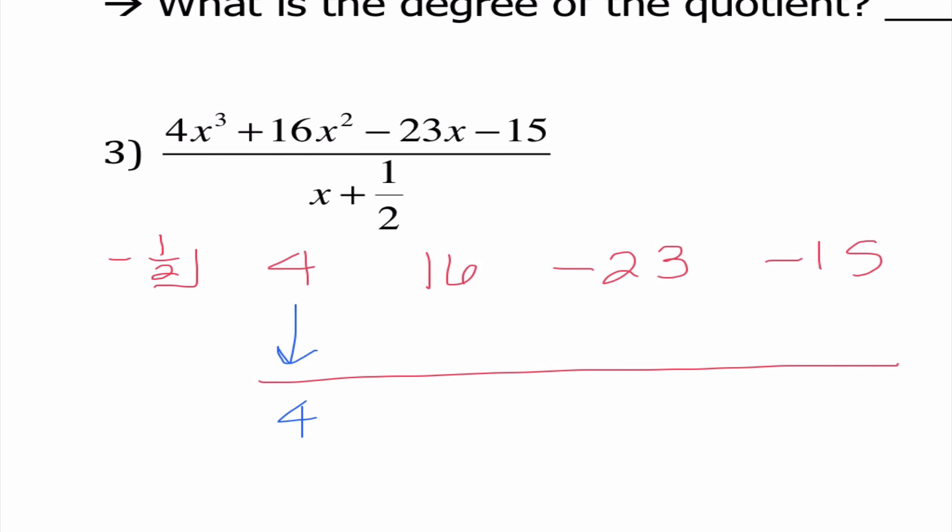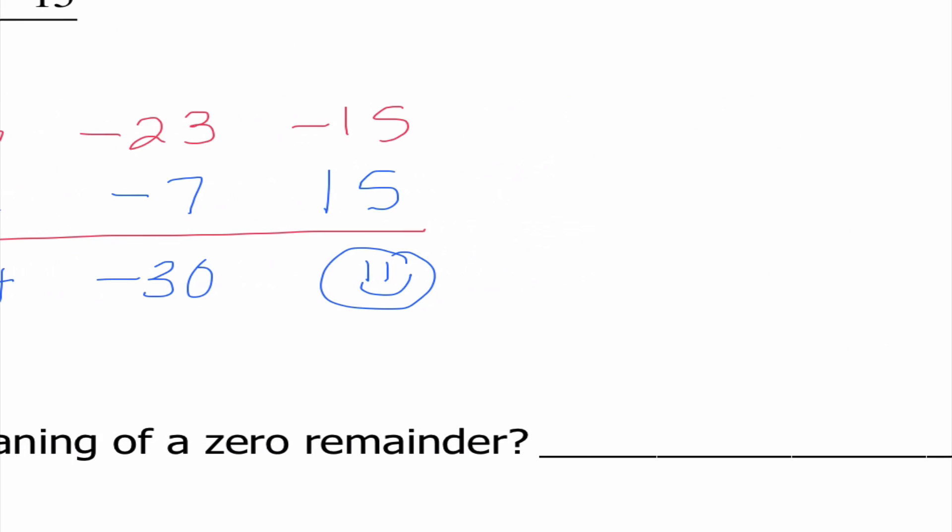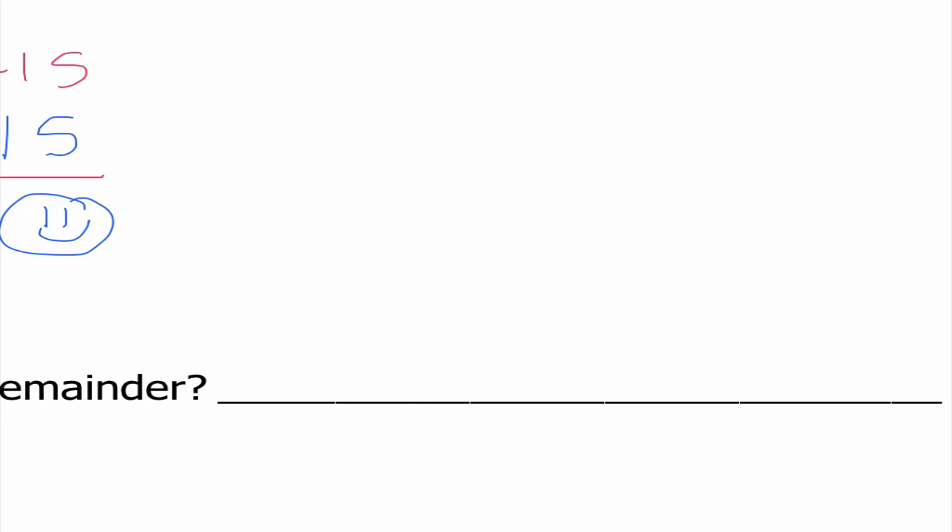When I bring down my 4, 4 times negative 1 half is negative 2. When I add down my column, I get 14. 14 times negative 1 half is negative 7. When I add down my column, I get negative 30. Negative 30 times negative 1 half is positive 15. So we end up getting 0 and I'm putting a smiley face because normally 0s make us happy.